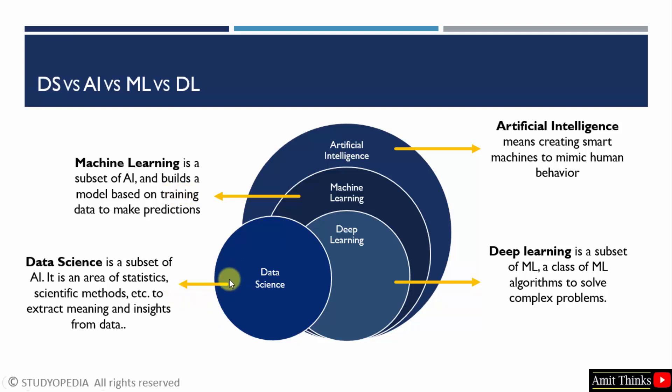Data science is a subset of AI used to extract meaning and insights from data. For example, if you go to Instagram and like car videos — MG, Kia, Honda, Tesla — you give Instagram data about your preferences. The next time you open Instagram, it will automatically show you related reels, posts, and maybe discounts on cars. This happens because of data science, which extracts meaning and insights from data.